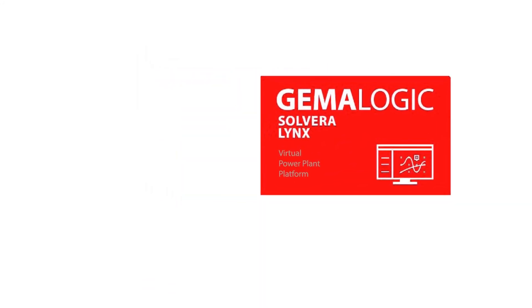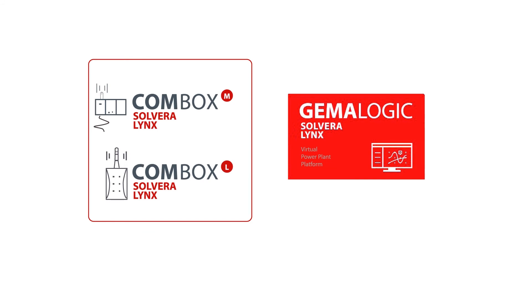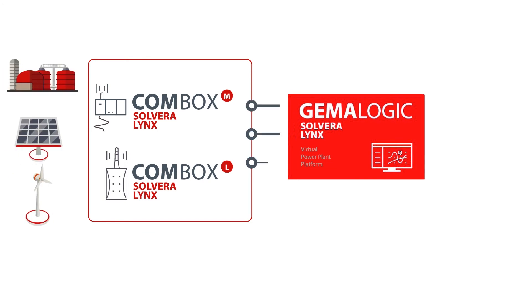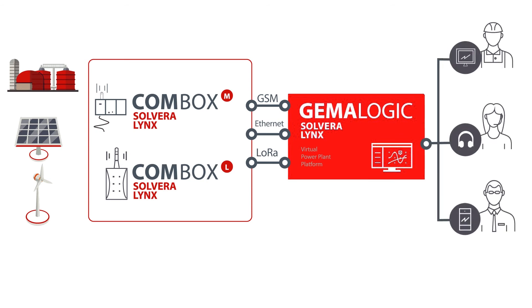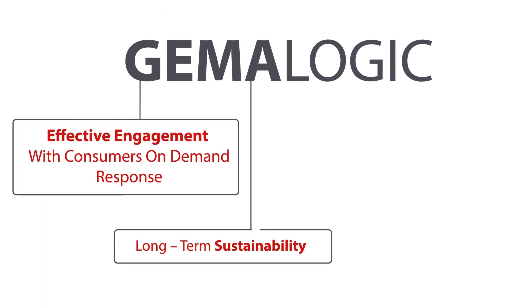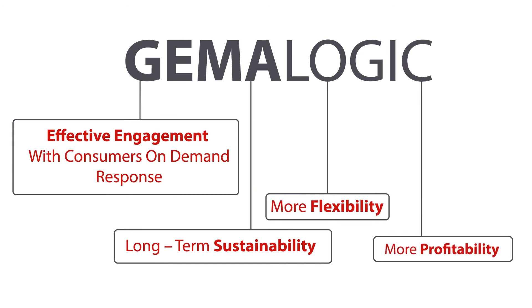So, how does it work? For monitoring and controlling of resources, GemmaLogic uses Combox communication gateways. The data is transferred to the software platform that captures, stores and analyses information in real time.